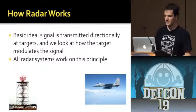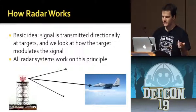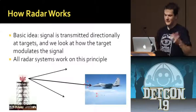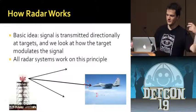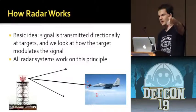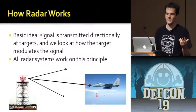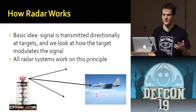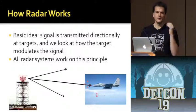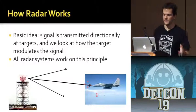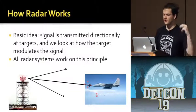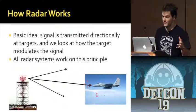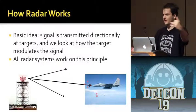The basic idea is we transmit a signal and we get some kind of return off of it. This is an aviation system — it spins around, sends out a pulse, and measures how long it takes to come back. But you could do a lot of processing with that return signal. Every radar system works on this principle: you're transmitting a signal from somewhere and looking at how it reflects off a target.